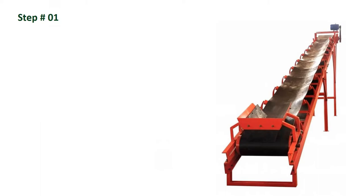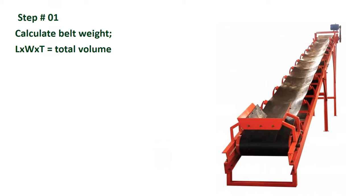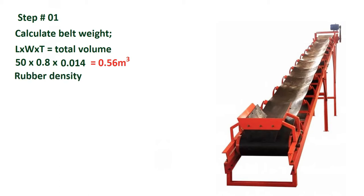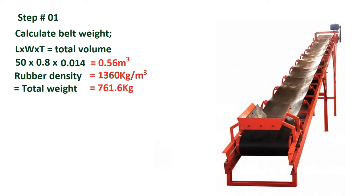In step one, we will calculate the belt weight. For this we need the length, the width, and the thickness to get the total volume: 50 meters × 0.8 meters × 0.014 meters gives 0.56 cubic meters. The rubber density for this belt is 1360 kg per cubic meter, so the total belt weight will be 761.6 kg.